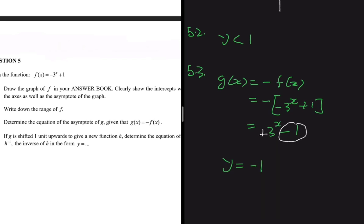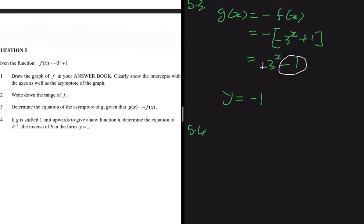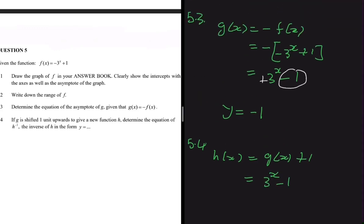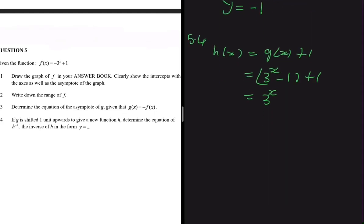For 5.4: g is shifted 1 unit upwards to give h. So h(x) = g(x) + 1 — that's how we shift upward; shifting downward would be minus 1. g(x) = 3^x - 1, so h(x) = 3^x - 1 + 1 = 3^x, since -1 + 1 = 0. So h(x) = 3^x. Now let's find h inverse.